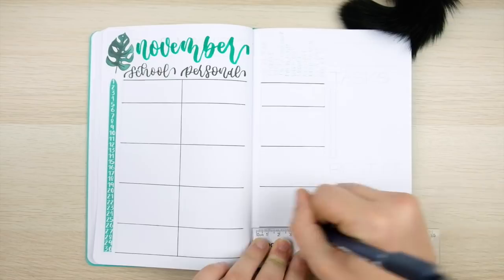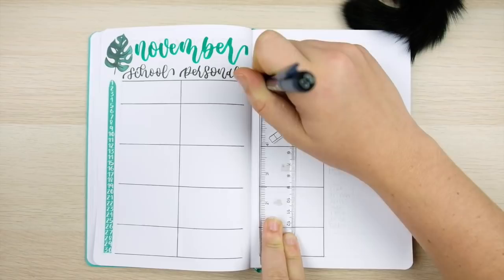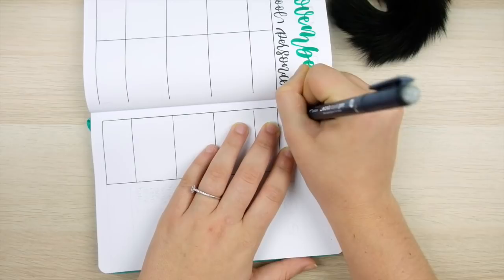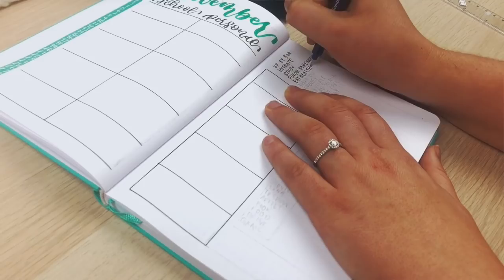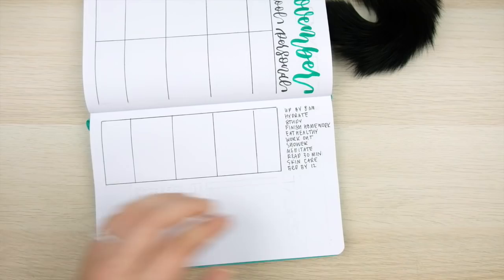Now since I already have my days listed vertically down the page, I thought this was another perfect spread to include one of those mini habit trackers similar to the first spread that I set up. I'm just creating my habit tracker on the other page lined up with the days on the left. And again you can make this as wide as you want depending on how many habits you have. Here in this example I'm making it 11 spaces wide to fit 11 habits.